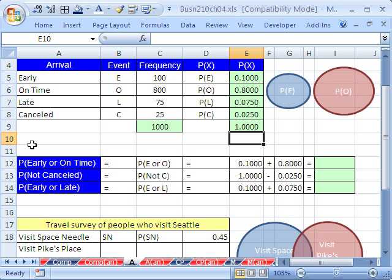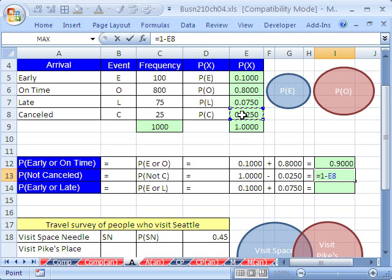So now we can calculate some ORs. What's the probability of early OR on time? Notice we can't do AND here because there is no overlap. But early OR on time, we simply add. Equals this one plus this one. Now what about not canceled? This is the complement rule. Here's the canceled right there. So for not canceled, we just say equals 1 minus that particular probability right there for that event. Finally, what about early OR late? Equals this early plus this late. So that one was easy. There's no overlap. They're mutually exclusive, only dating one person.